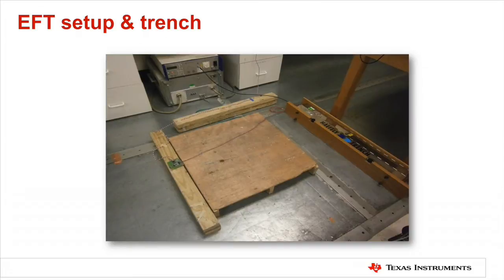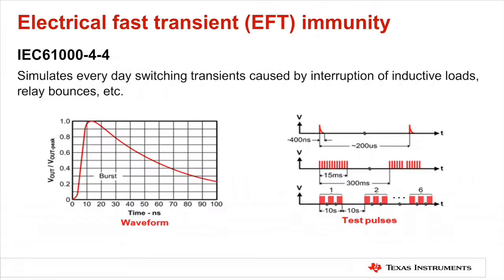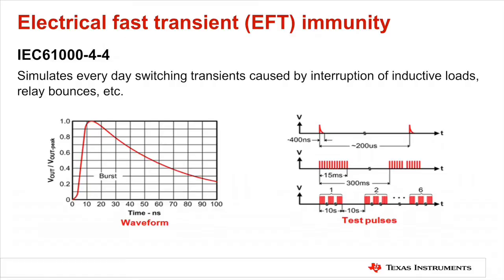These signals are introduced to the system via a coupling trench, as shown here. Significant properties of this test pulse are its short rise time, the high repetition rate, and energy content. Though an individual EFT pulse peak voltage is only 4 kV compared to the ESD pulse of 15 kV, an EFT pulse delivers more than twice as much power. Moreover, this test requires the application of 6 burst frames of 10 seconds duration, with 10 seconds pause interval between each frame. The entire EFT pulse train delivers 4 orders of magnitude more energy than the ESD pulse.